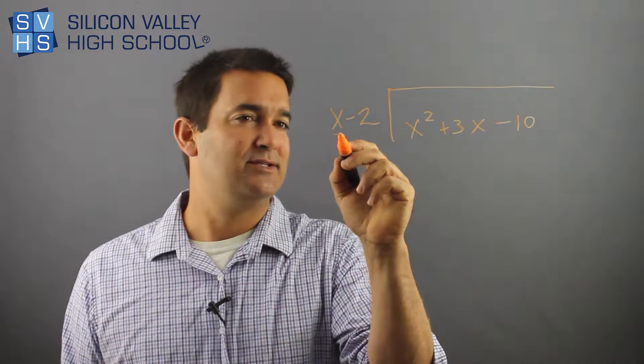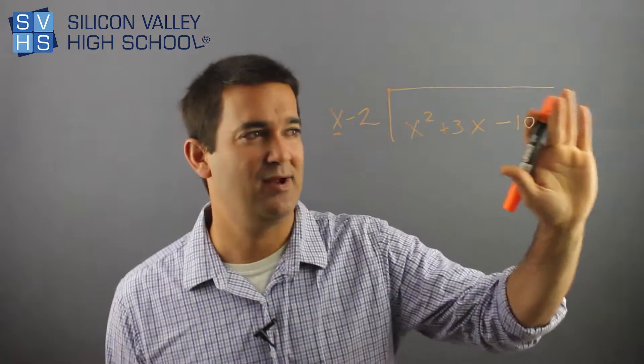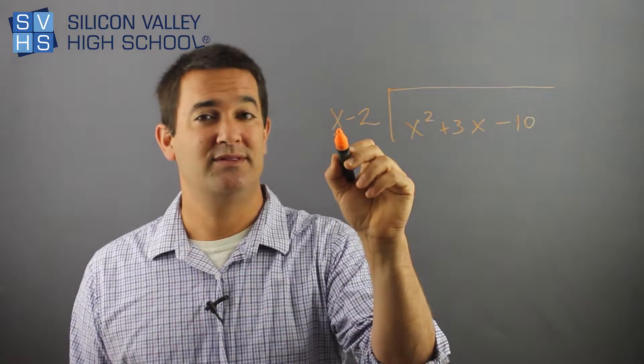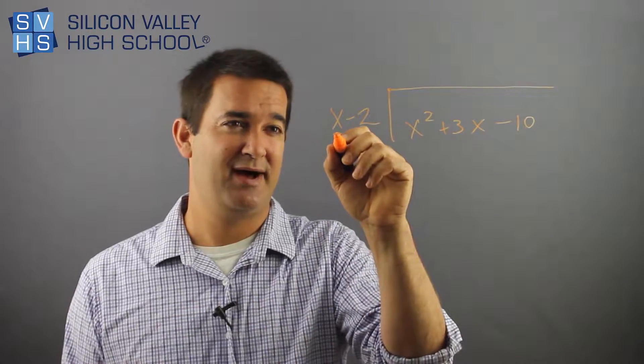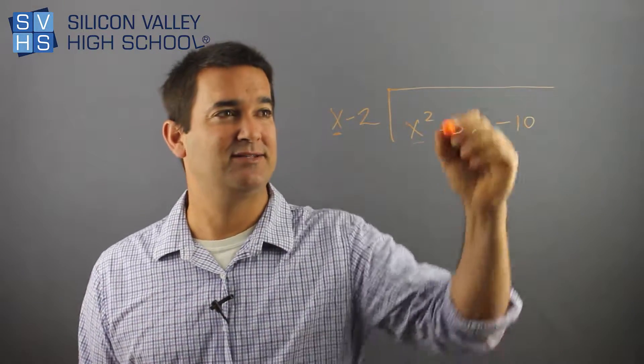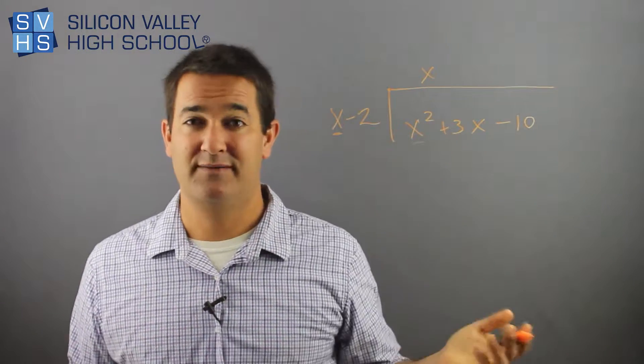So what you do is, you look at x, and you look at the first guy in the sequence, x squared. Don't ignore everything else. Ignore the minus 2. Ignore everybody. And you say, what would I multiply x by to make him x squared? What would I multiply x by to get him? And the answer is x. Because x times x is x squared. I met my goal.